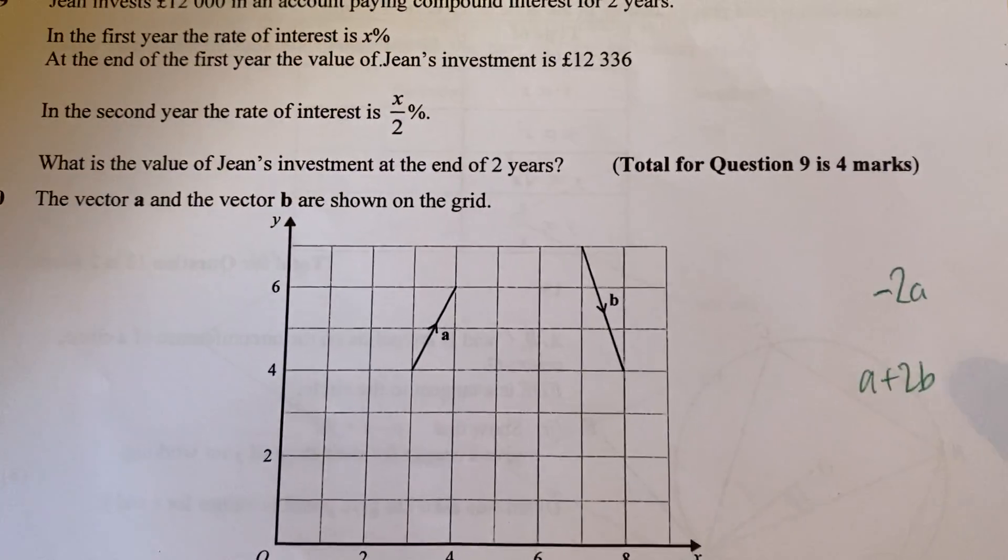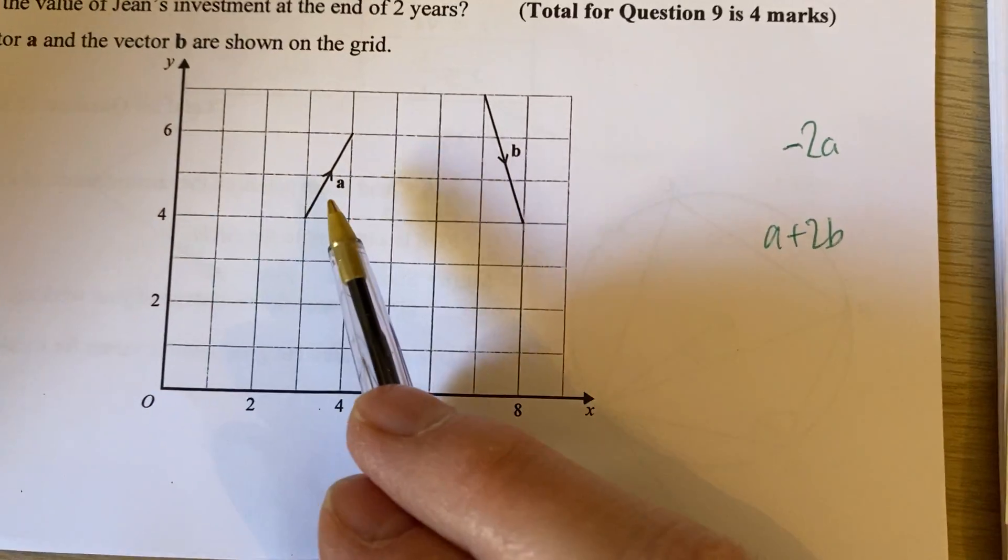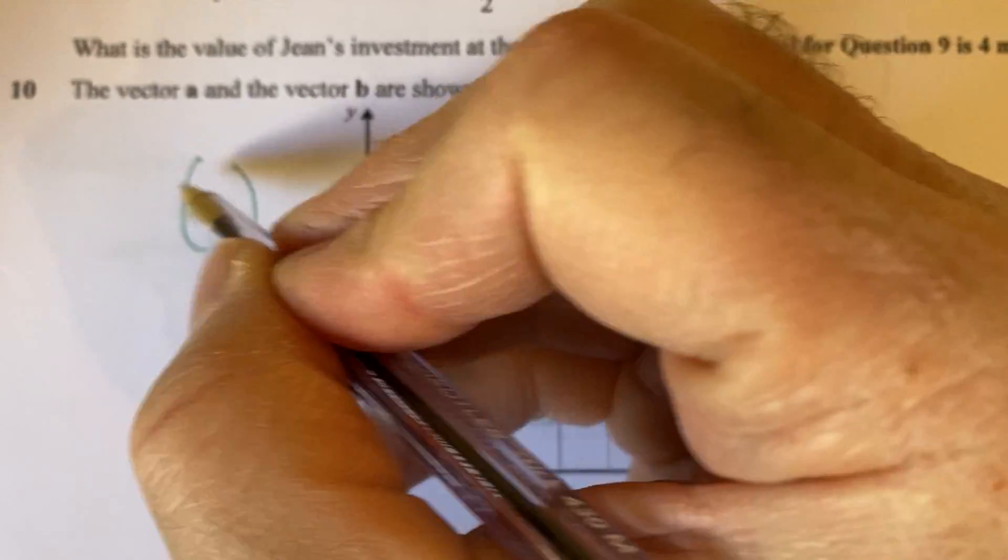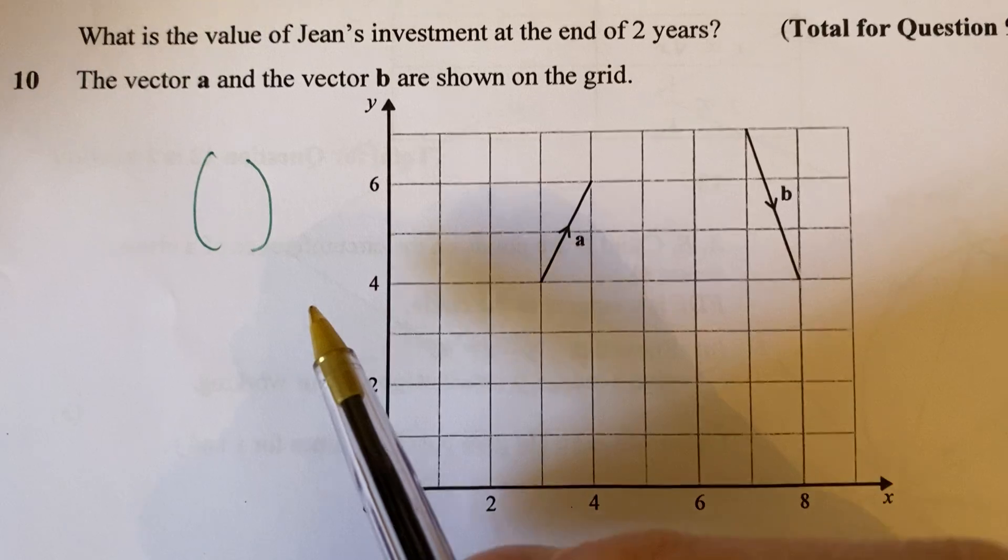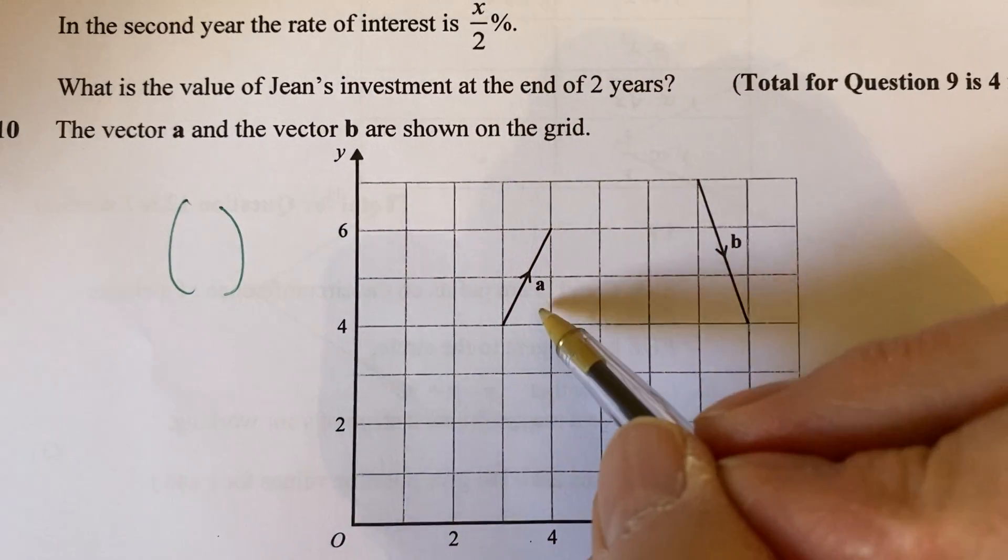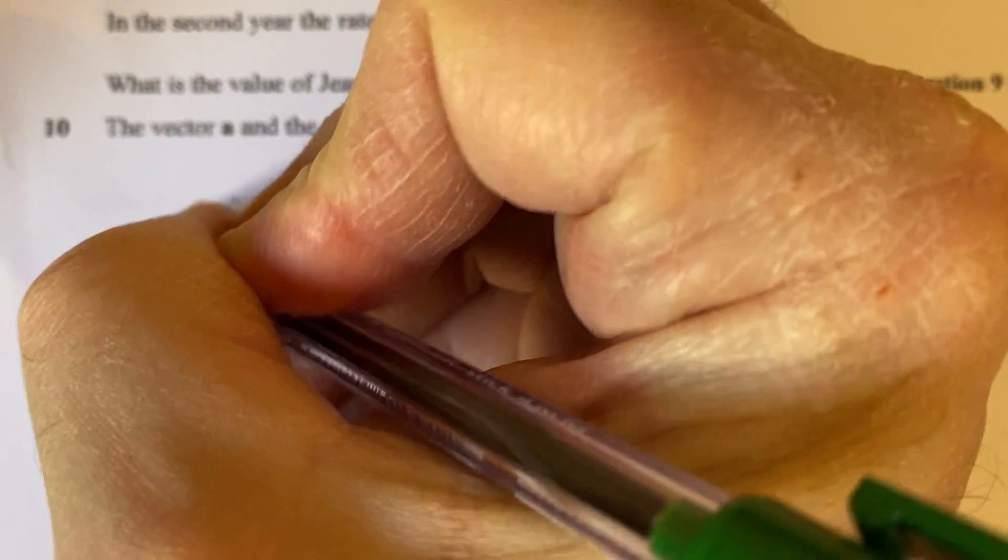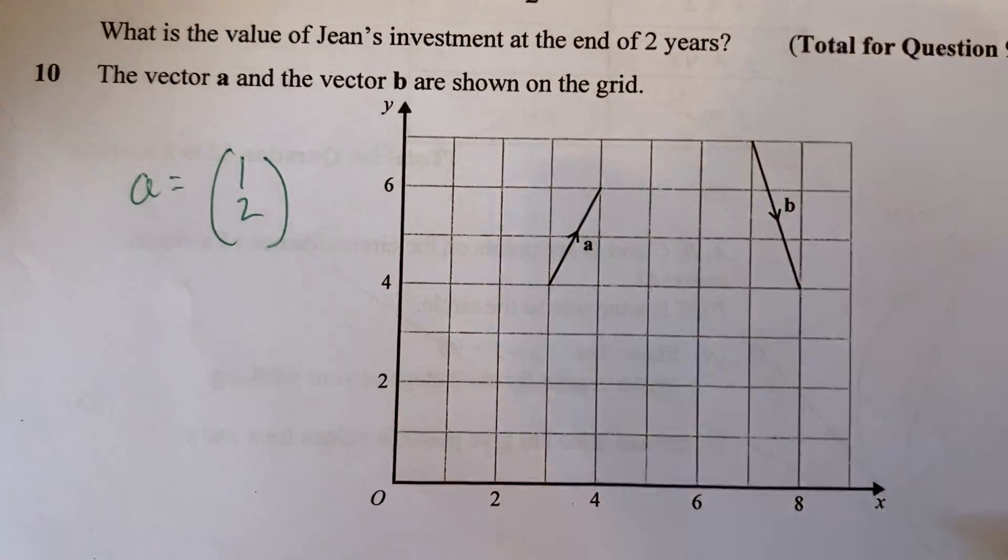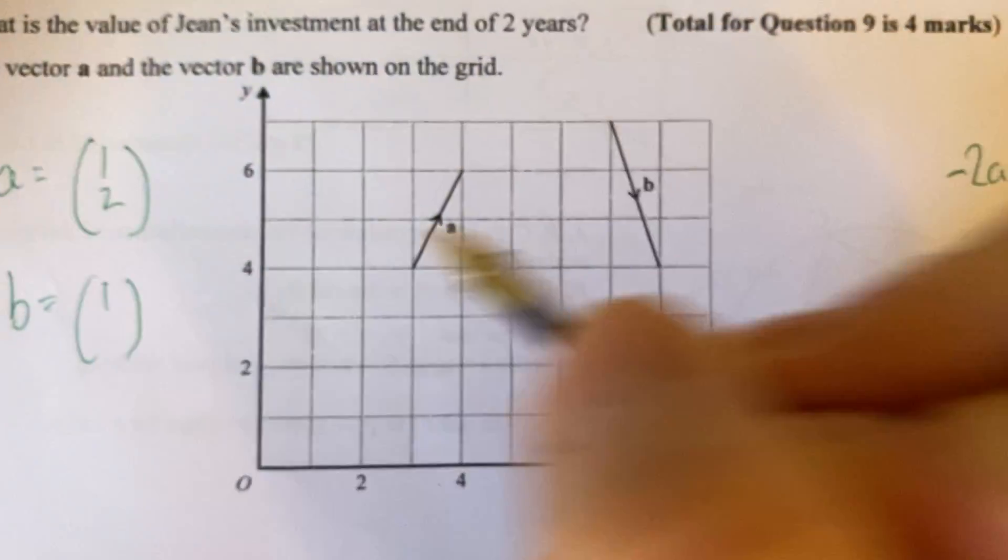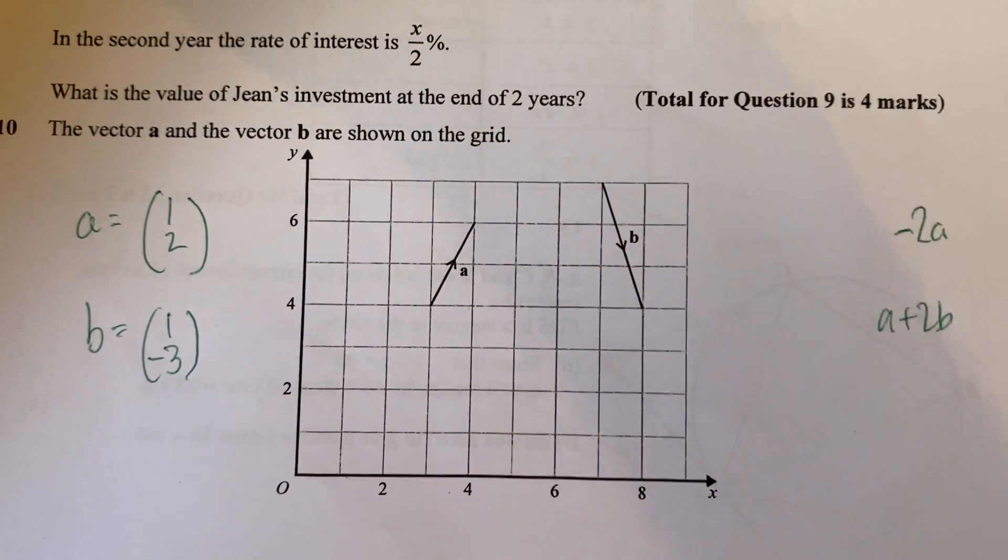Question 10. Now, it says here that vector A and B are shown on this grid here. Vectors. Remember vectors, column vectors. The top number is right or left along the corridor. And the bottom number is up or down. Okay, so here I can see this vector A is going to be 1 across, 2 up. So that's my vector A. And my vector B is 1 across but now it's down 3. So it's minus 3. So that's how I write those vectors.